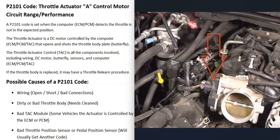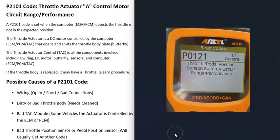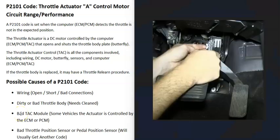The last possible cause is a bad throttle position sensor or a bad pedal position sensor. Usually when these go out, you'll get another code alongside P2101. The throttle position sensor is on the throttle body and reports how open the butterfly plate is; the pedal position sensor is on the gas pedal and reports how much it's been pressed. For example, a P0121 — throttle/pedal position sensor switch A circuit range/performance — would point to an issue with that sensor. Pay attention to any additional codes and test those sensors accordingly.